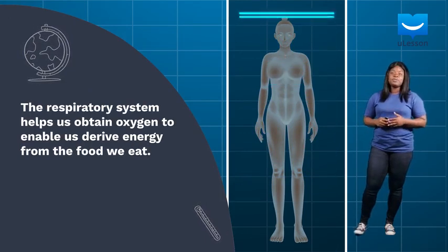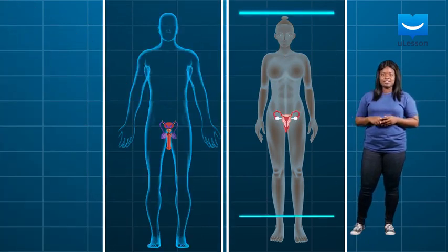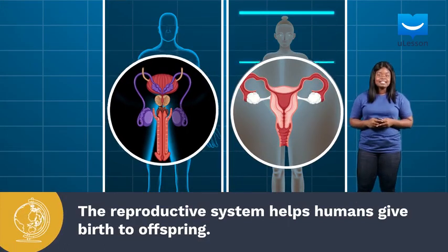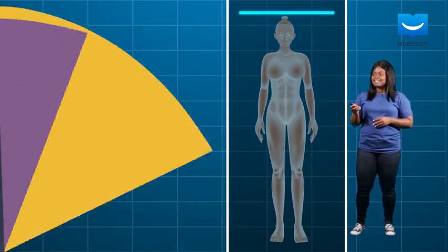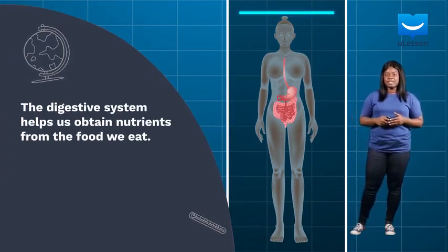Then, we will go further to learn about the reproductive system, that helps us give birth to offspring, and the digestive system, which helps us obtain nutrients from the food we eat.